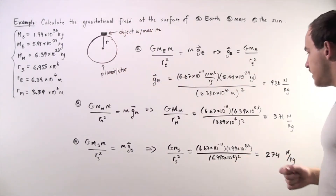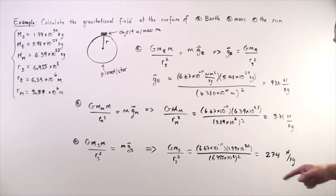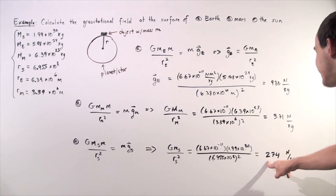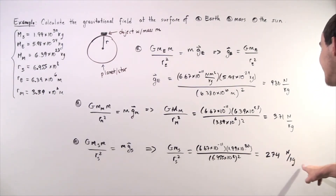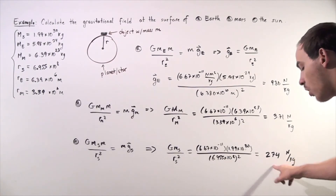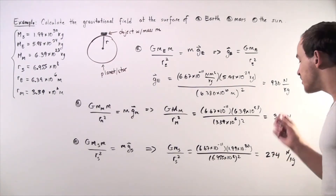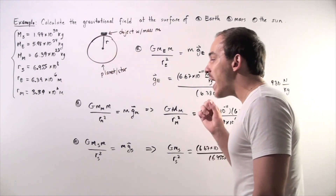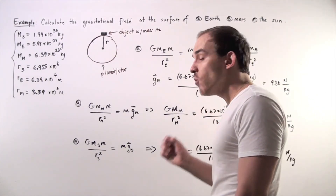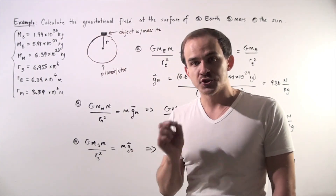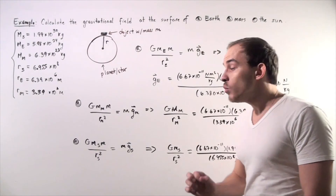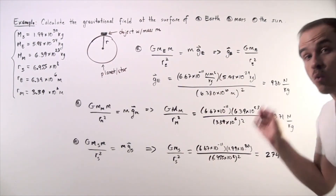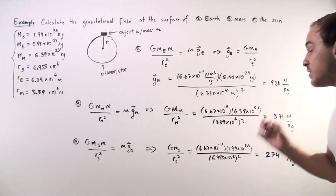Plugging these values in, we get 274 newtons per kilogram, or 274 meters per second squared. That means if we were somehow able to overcome the high temperatures of the Sun, we would not be able to walk — in fact, we'd be squished and would probably die.